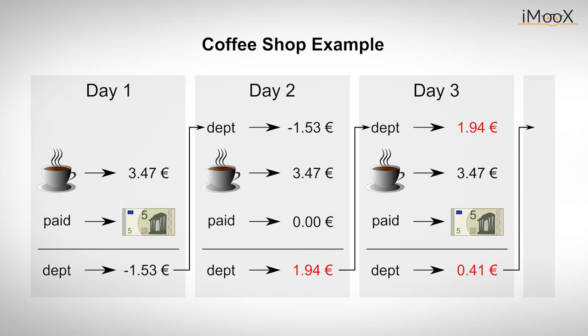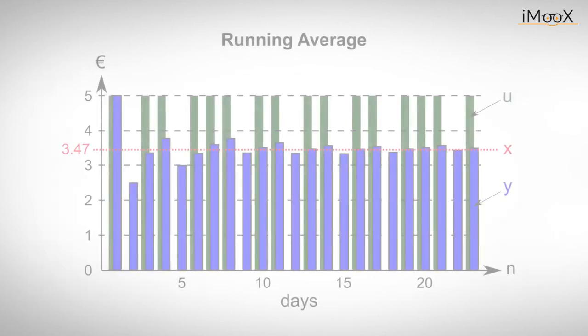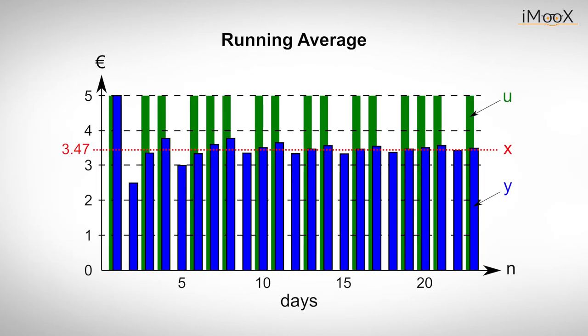What is actually happening can be seen in this diagram. In the figure, x represents the price of the coffee. U, the money the engineer is giving, which is either 0 or 5 euros. Y is the average value the engineer pays for the coffee day by day. And n the number of days that have passed. You can see that over time the value of y approaches that of x.